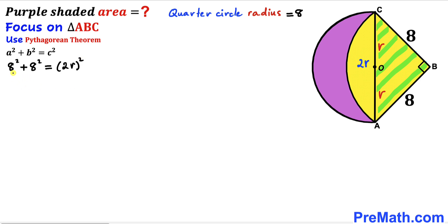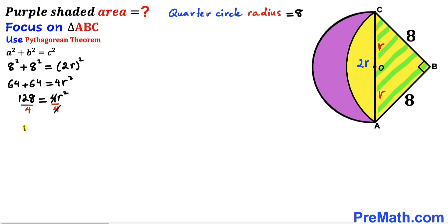Simplifying: 64 + 64 = 4r², so 128 = 4r². Dividing both sides by 4, r² = 32. Taking the square root of both sides, the square and square root undo each other, giving us r = 4√2 units.